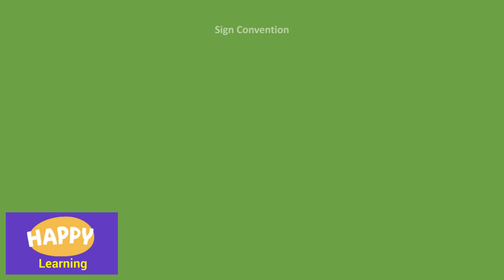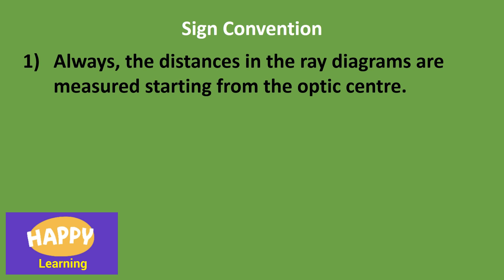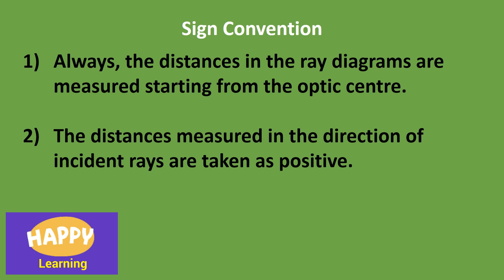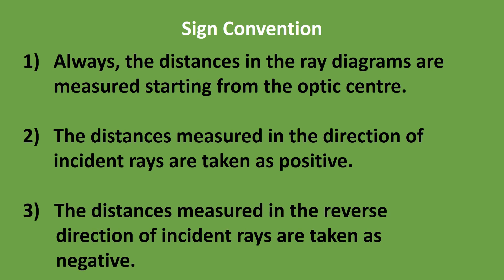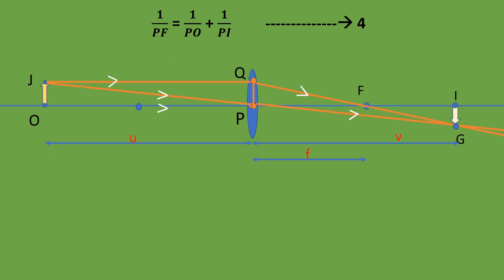Now the sign convention. Always the distances in the ray diagrams are measured from the optic center. You have to start from the optic center only. The distances measured in the direction of incident rays are always taken as positive. And the distances measured in the reverse direction of incident rays are taken as negative.